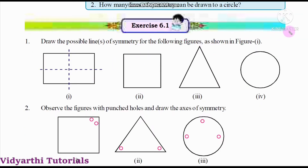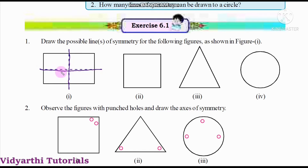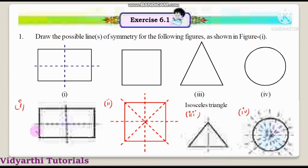Now let's go into our exercise, that is exercise 12.1. Look at the first question: draw the possible lines of symmetry for the following figures as shown. Figure 1 is a rectangle. For a rectangle, this will be one line of symmetry, and this will be the second line dividing it into two equal halves. So the rectangle has two lines of symmetry.